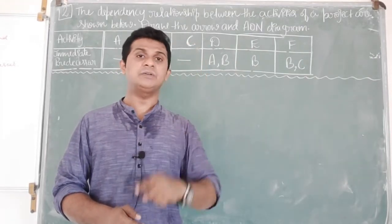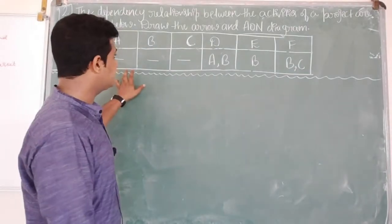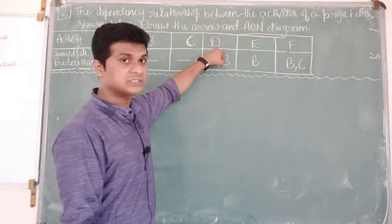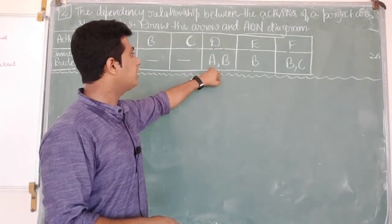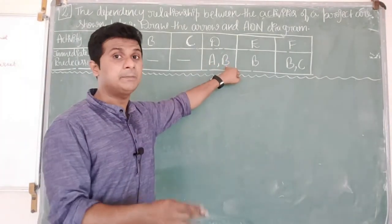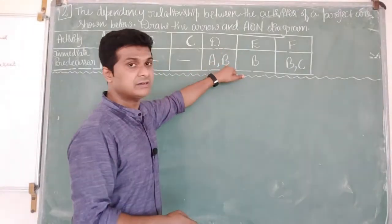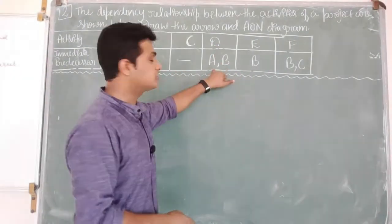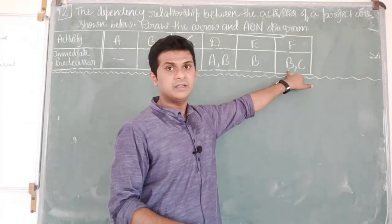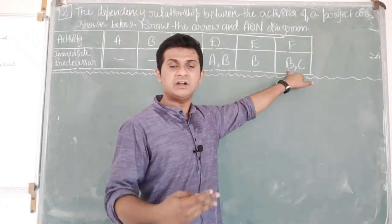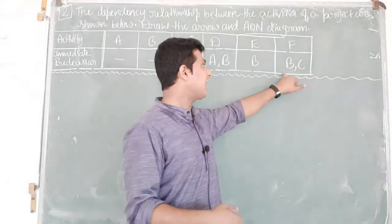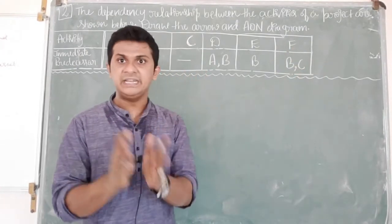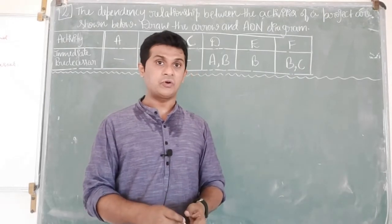The third important consideration is joint activities. Activity D can start only after activities A and B are completed, meaning A and B should join together before the commencement of D — these are joint activities. Similarly, before starting activity F, activities B and C must be completed, so B and C are also a joint activity. Considering these three aspects, we can move forward in drawing the arrow diagram.